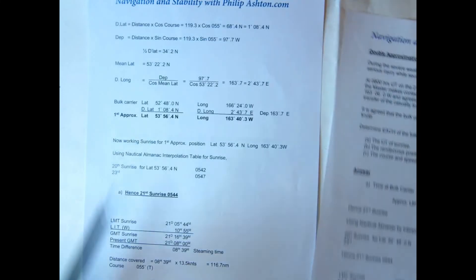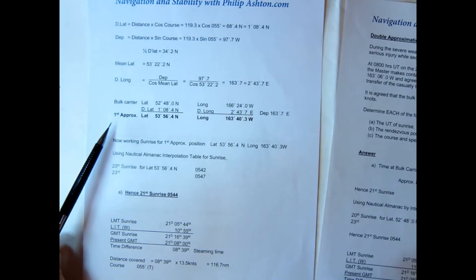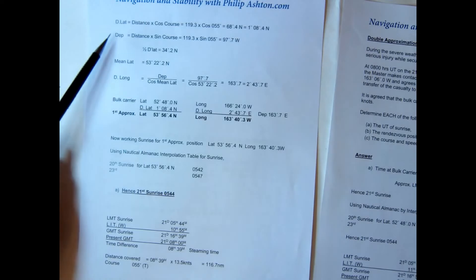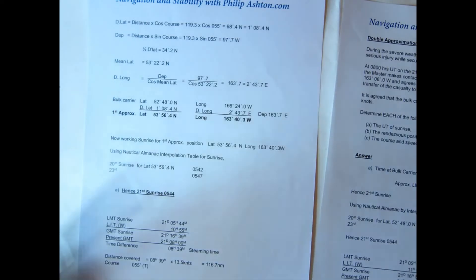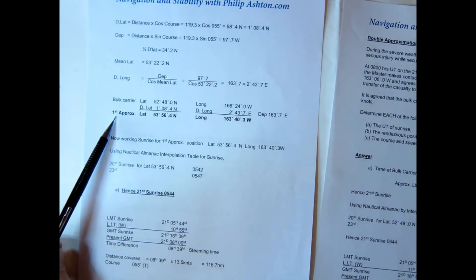So there's the information there. Let's transfer that forward and work out the first approximate position. So here's the workings by plane sailing. Of course you could do it by Mercator if you wish. And we worked out what we call our first approximate position.